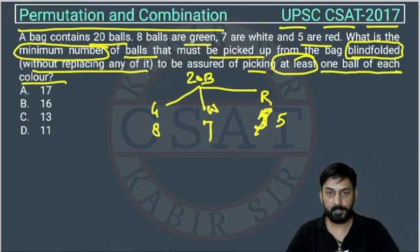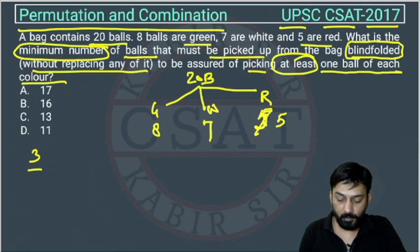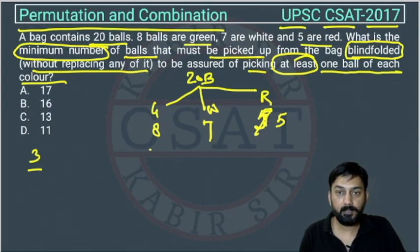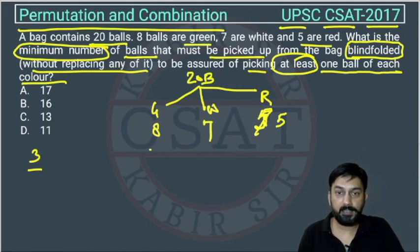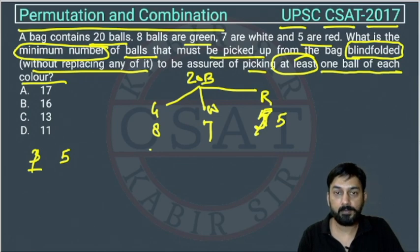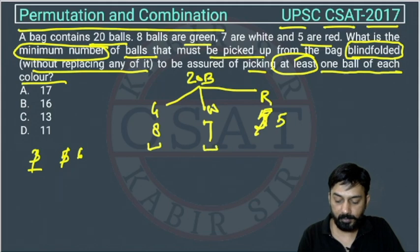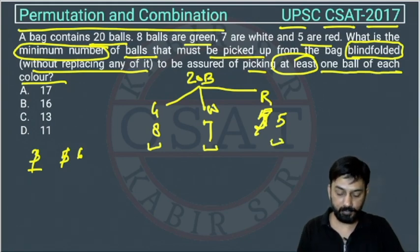Suppose I am picking three balls — there is a possibility that all balls are green, or all are white, or all are red. I want at least one ball of each color. Three is too few; with five balls, you could still pick all red. With six balls, all six could be green, or all white, or five red and one other color. So six is also not enough.